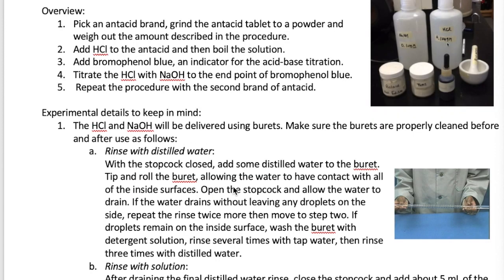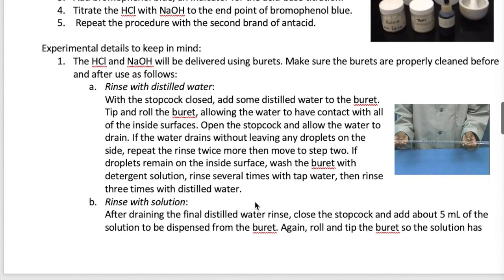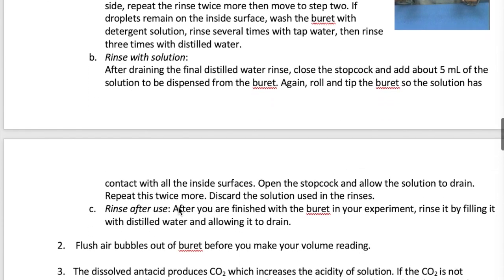Okay, let's now discuss some important details in the experiment. Both the HCl and NaOH will be delivered using burettes. As usual, when you use burettes, you must clean them before and after use. The procedure to clean a buret before use is shown right here. Basically, what you have to do is first rinse the buret with distilled water, and you want to hold it as shown in the picture here to rinse the buret. After you're sure the buret is clean, which is when no water droplet remains inside the surface, then you're going to rinse the buret with the solution that you're going to use, which is either HCl or NaOH. When you're done with the buret at the end, you want to rinse again with water before you return the buret to the stock room.